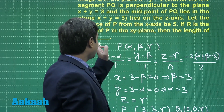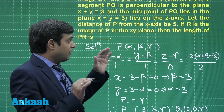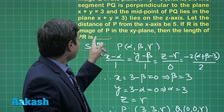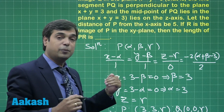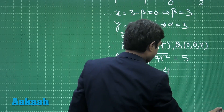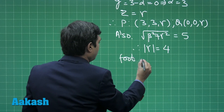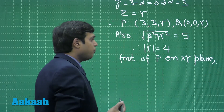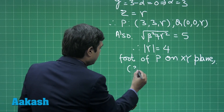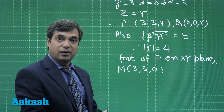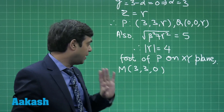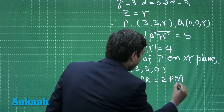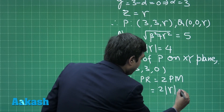The next information: R is the image of point P in the xy-plane. Consider the xy-plane — here is point P; if we take its image it would be below it. Instead of finding the image directly, let us first consider the foot. Let the foot of P on the xy-plane be M. The foot of P on the xy-plane is simply (3, 3, 0). The distance PR equals twice PM. So PR = 2|γ| = 2 × 4 = 8 units.